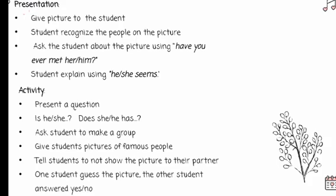Students may recognize the people in the pictures. The teacher asks whether they know the person by asking: 'Have you ever met her?' or 'Have you ever met him?' The teacher then explains that if students don't know the person, they can make assumptions using the sentence form 'She seems...' or 'He seems...', rather than 'She is...' or 'He is...', since we can only use those when we know a statement to be true.